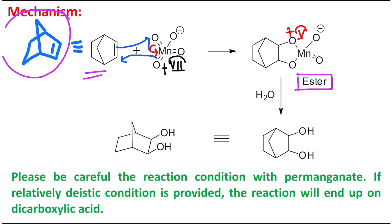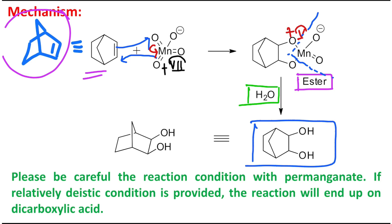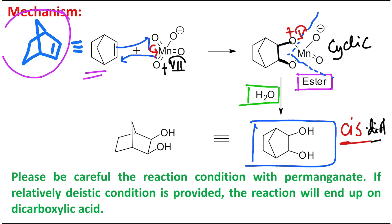This ester in the subsequent stage undergoes hydrolysis by the water present in the reaction medium. The manganese–oxygen bond breaks and ultimately produces a hydroxyl group. But this is not a simple hydroxyl — it is a cis hydroxyl because it came from a ring or cyclic intermediate. In a cyclic compound these oxygens are in cis orientation, so this is actually a cis-1,2-diol.